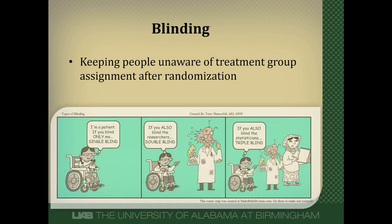By convention, there are three types of blinding: single blind, double blind, and triple blind. In single blind, we only blind the patient. In double blind, we blind both the patient and the researchers. In triple blind, we blind the patient, the researchers, statisticians, and outcome assessors. Some authors use these terms differently, so it's important to look at the paper and see who exactly they blind. If they don't tell you, assume this convention.